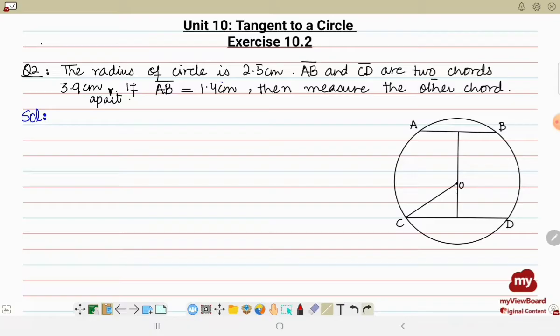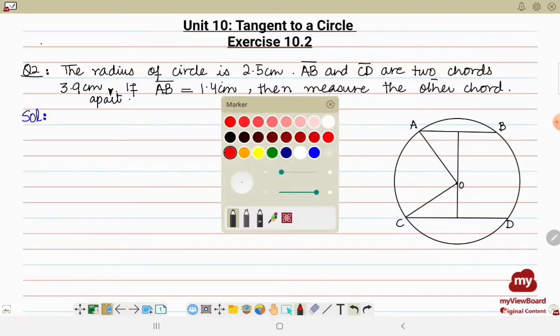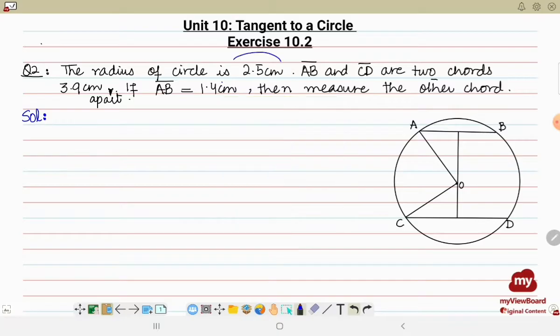I have already drawn a circle with center O and let me draw the radius now. Center to one point of a circle, so the radius given to us is 2.5 centimeter.